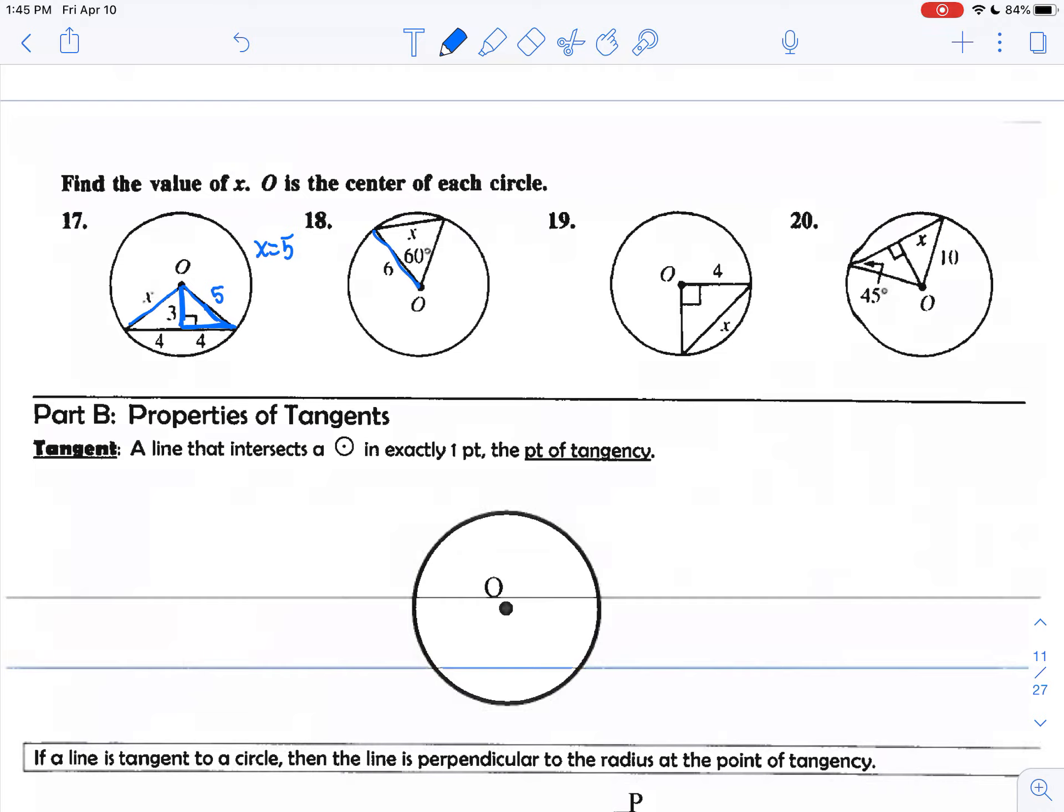On 18, you have 60 degrees central angle, and this is the radius, this is also the radius, so this must be six. We see here that if this is an isosceles triangle with base angles being congruent and the top angle is 60, that's in fact an equilateral triangle. If it's an equilateral triangle, then we have that X must be the same length as six.